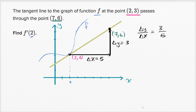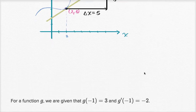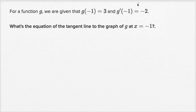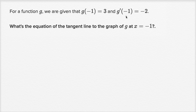Let's do another one of these. For a function g, we are given that g of negative one equals three, and g prime of negative one is equal to negative two. What is the equation of the tangent line to the graph of g at x equals negative one?